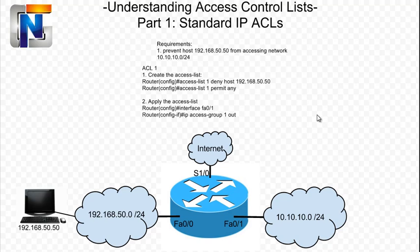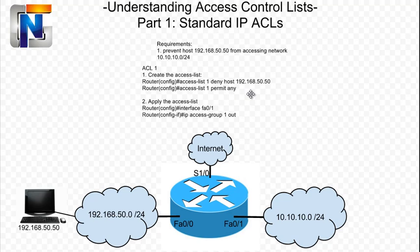In this example, we are configuring an access list, which will be called AccessList1. So in global configuration mode, we would type, on a Cisco router, Access-List 1, deny host 192.168.50.50. And then we'll need to add a permit statement underneath that to permit any other traffic. Access-List 1, permit any. That is our list. That is as simple as it gets. It's just two lines here in order to prevent the host 192.168.50.50 using this list.